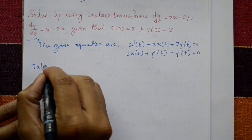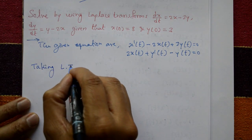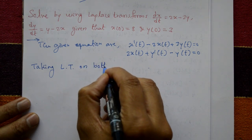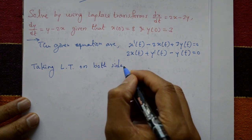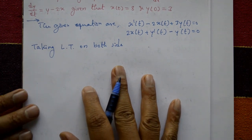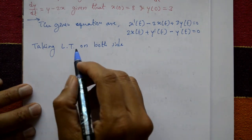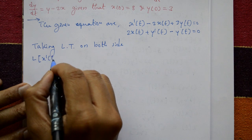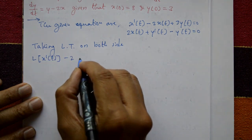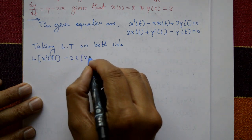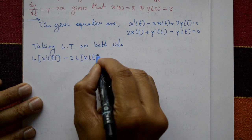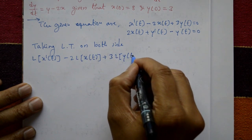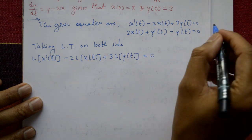Taking Laplace transform on both sides of the first equation: Laplace of x'(t) − 2·Laplace of x(t) + 3·Laplace of y(t) = 0.